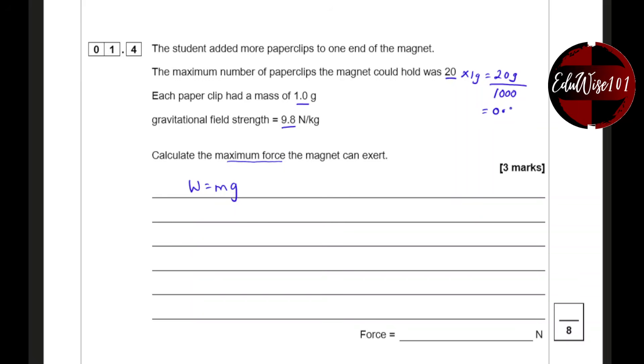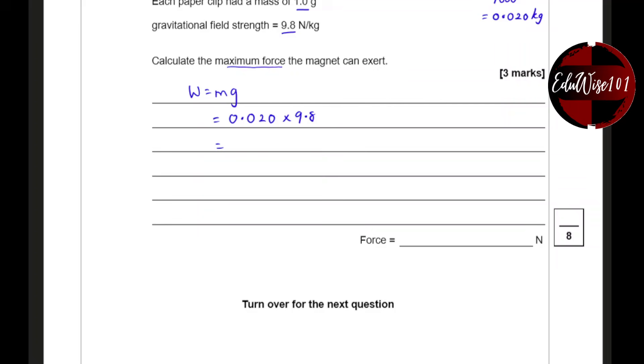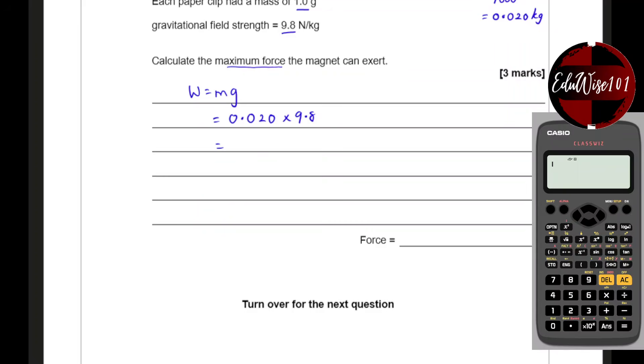That would give me 0.020 kilogram. So 0.020 times 9.8 would give me a total force of, let's say, let's bring the calculator. So 0.02 times 9.8. I seem to have taken it away. Okay, so 0.02 times 9.8.